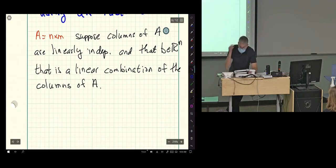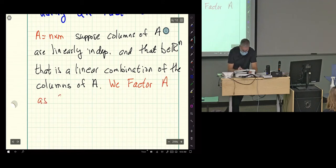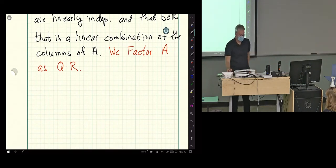Once again, only way to get the zero vector by adding up columns of A is if they put the weight on the linear combinations all zero. Null space of A is just a zero vector. And then we know B being a linear combination of the columns of A means AX equals B has a solution. So, it does have at least one solution. This makes it unique. So, this is what we do.